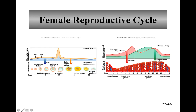The corpus luteum also inhibits the anterior pituitary from releasing luteinizing hormone and follicle stimulating hormone. If there's no fertilization, the corpus luteum will begin to break down and won't secrete estrogens and progesterone anymore. Without those hormones, you can't support the uterine lining, so it will disintegrate and slough off — be expelled from the woman's body. Then, without these estrogens and progesterone, the anterior pituitary is no longer inhibited and can release luteinizing hormone and follicle-stimulating hormone again.